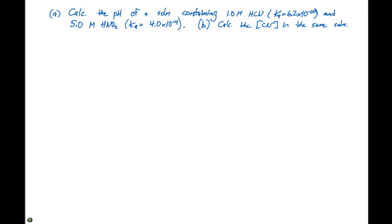In this video, we'll take a look at a two-part example problem. Part A asks us to calculate the pH of a solution containing 1.0 molar HCN, which has a Ka of 6.2 times 10 to the minus 10, and 5.0 molar HNO2, which has a Ka of 4.0 times 10 to the minus 4. Part B asks us to calculate the CN minus concentration in the same solution.